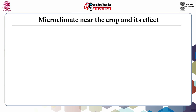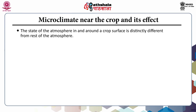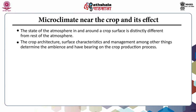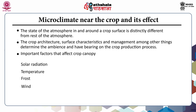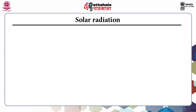Let's see the microclimate near the crop and its effect. The state of the atmosphere in and around a crop surface is distinctly different from the rest of the atmosphere. The crop architecture, surface characteristics and management among other things determine the ambience and have bearing on crop production. The important factors that affect crop canopy are solar radiation, temperature, frost, and wind.